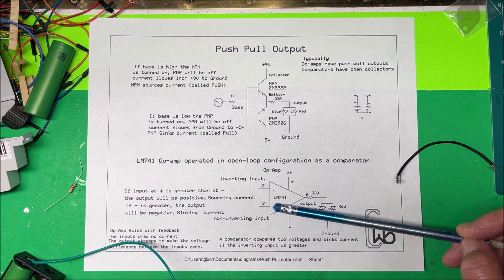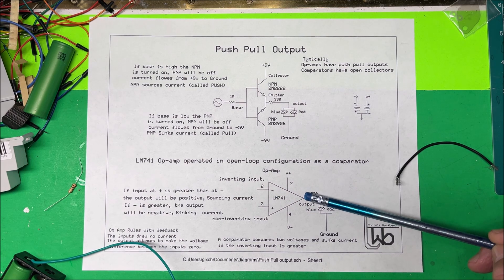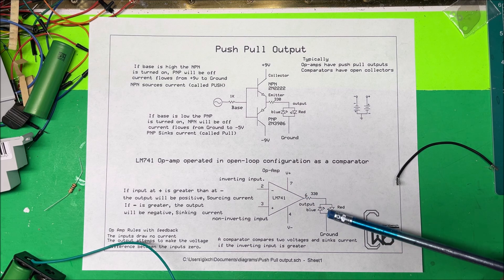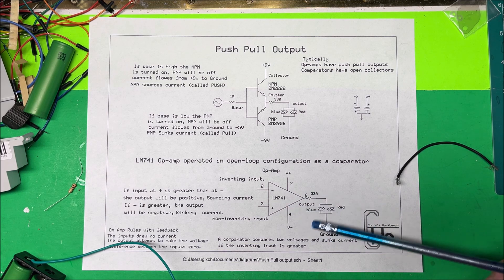And if the positive side here is greater than the negative side then this is going to be high, and if it's the opposite way around it's going to be low. So you'll be either sinking or sourcing current that way.